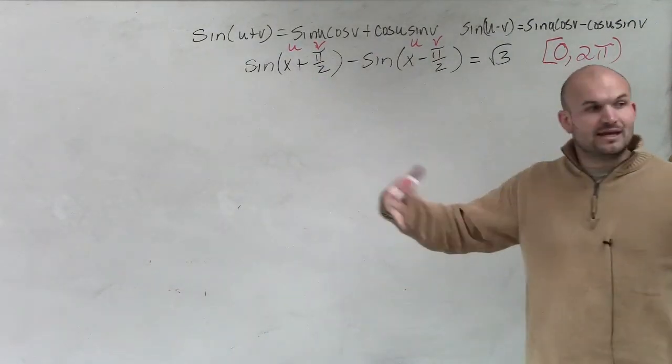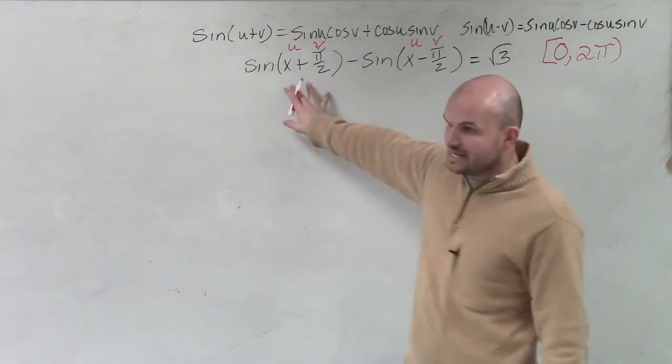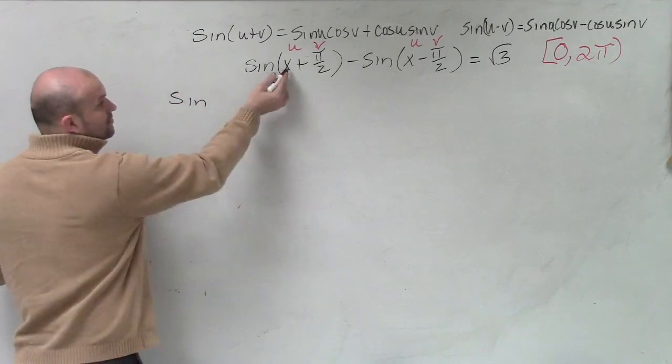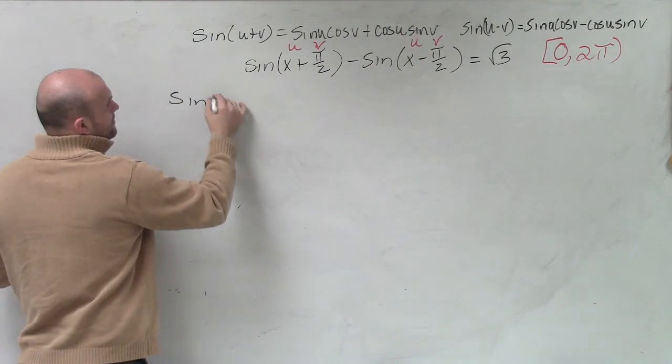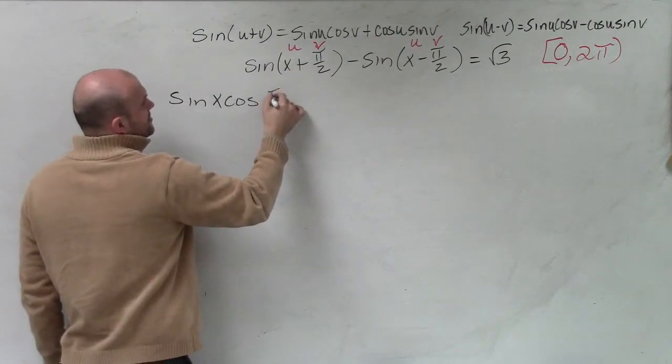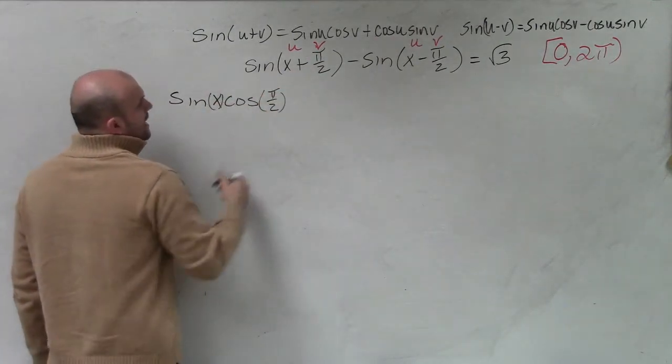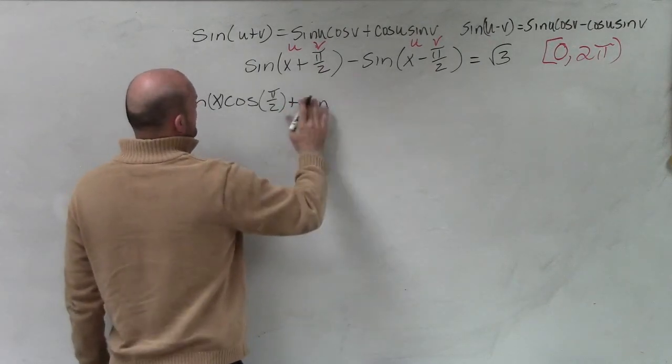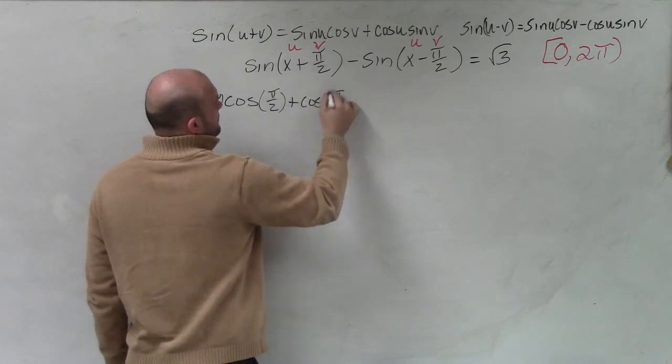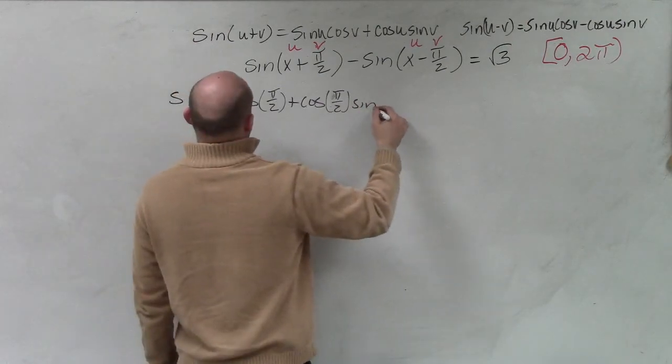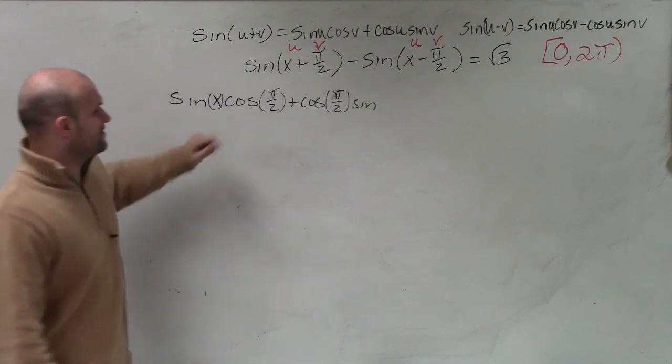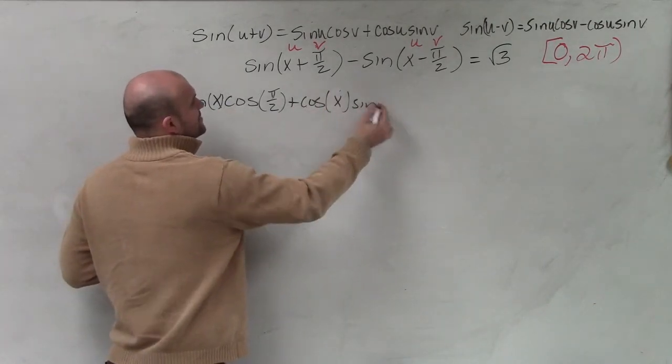So now what we can do is just plug in our values. We now know for this is going to be, I'll put this back in black. So sine of u—u in this case is x—times the cosine of v, which is π over 2. And then that's going to be plus the sine of v—I'm sorry, the cosine of v, which is π over 2—times the sine of u, which is cosine of u, cosine of v. That's cosine of x. Sorry, cosine of u times sine of v.